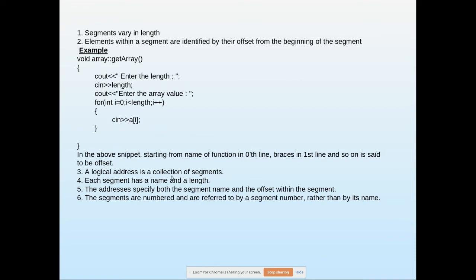A logical address is a collection of segments. This creation of segments is what we call a logical address. Each segment has a name and a length. For example, get array is the name of the segment, and each line has some statements. If you count 0, 1, 2, 3 through 10, then 10 is the length. The addresses specify both the segment name and the offset within the segment - get array and zero line, get array and first line, and so on.